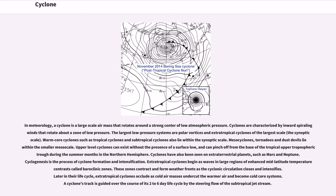Mesocyclones, tornadoes, and dust devils lie within the smaller mesoscale. Upper-level cyclones can exist without the presence of a surface low, and can pinch off from the base of the tropical upper tropospheric trough during the summer months in the northern hemisphere. Cyclones have also been seen on extraterrestrial planets, such as Mars and Neptune. Cyclogenesis is the process of cyclone formation and intensification.